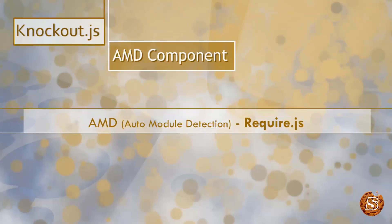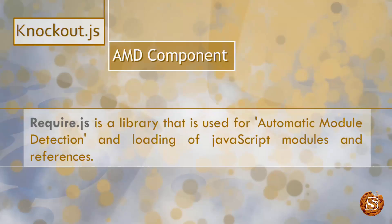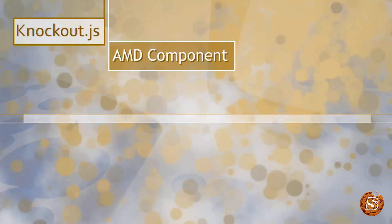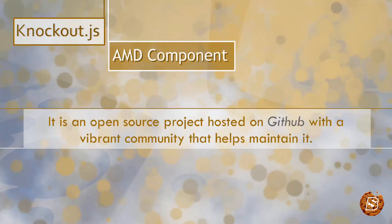In this chapter we will see how we can make use of automatic module detection using require.js. We will be making use of the require.js library to load our view module and templates. Templates will be defined in an external HTML file and loaded into our Knockout application. Require.js is a library used for automatic module detection and loading of JavaScript modules and references. It was developed by James Burke from Mozilla and is an open source project hosted on GitHub with a vibrant community that helps maintain it.